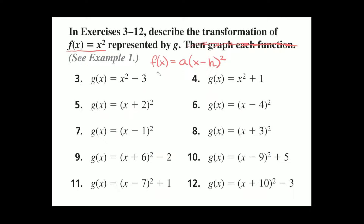To give a little more context, the vertex form of a quadratic function is f of x equals a times x minus h squared plus k. There are a few really important things to point out. The a tells you how much your parabola stretches or shrinks. The h moves the parabola side to side, and you take the opposite sign. The k moves your parabola up or down.